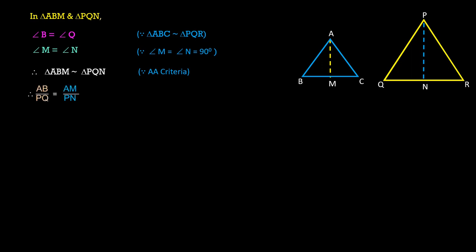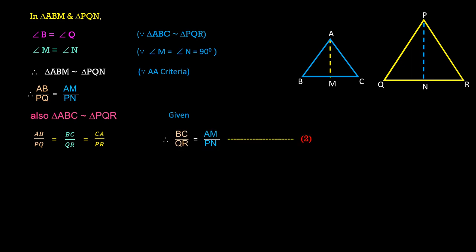Now we consider the ratio of their corresponding sides: AB by PQ is equal to AM by PN. Since triangle ABC and triangle PQR are similar, we have AB by PQ equals BC by QR equals CA by PR. From these two results, we can show that BC by QR equals AM by PN.